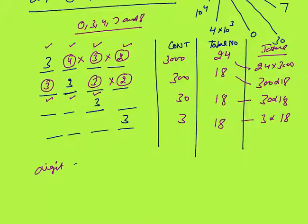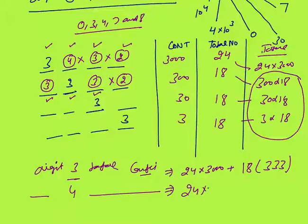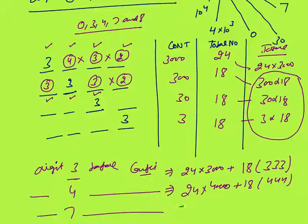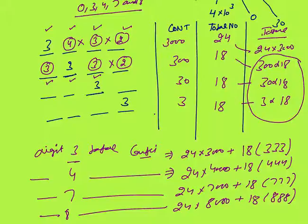Total contribution by digit 3 is 24 × 3000 + 18 × 333. Similarly, digit 4 contribution is 24 × 4000 + 18 × 444; digit 7 contribution is 24 × 7000 + 18 × 777; digit 8 contribution is 24 × 8000 + 18 × 888. The pattern is the same — just replace 3 by the respective digit.